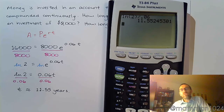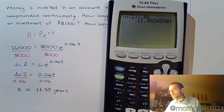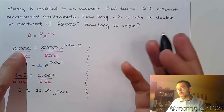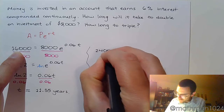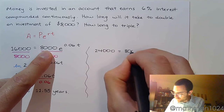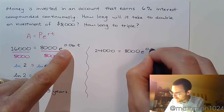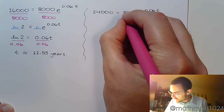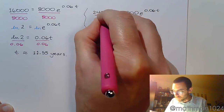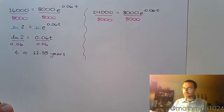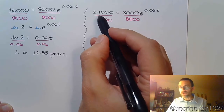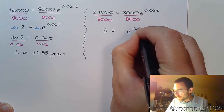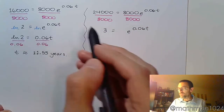So how long would it take to triple? The setup is going to be exactly the same, except instead of ending at sixteen thousand we're ending at twenty-four thousand. So we have 24,000 equals 8,000 times e to the 0.06t. Dividing both sides by eight thousand, the ratio of twenty-four thousand to eight thousand is three — so when doubling we got a two, and for tripling we get a three.